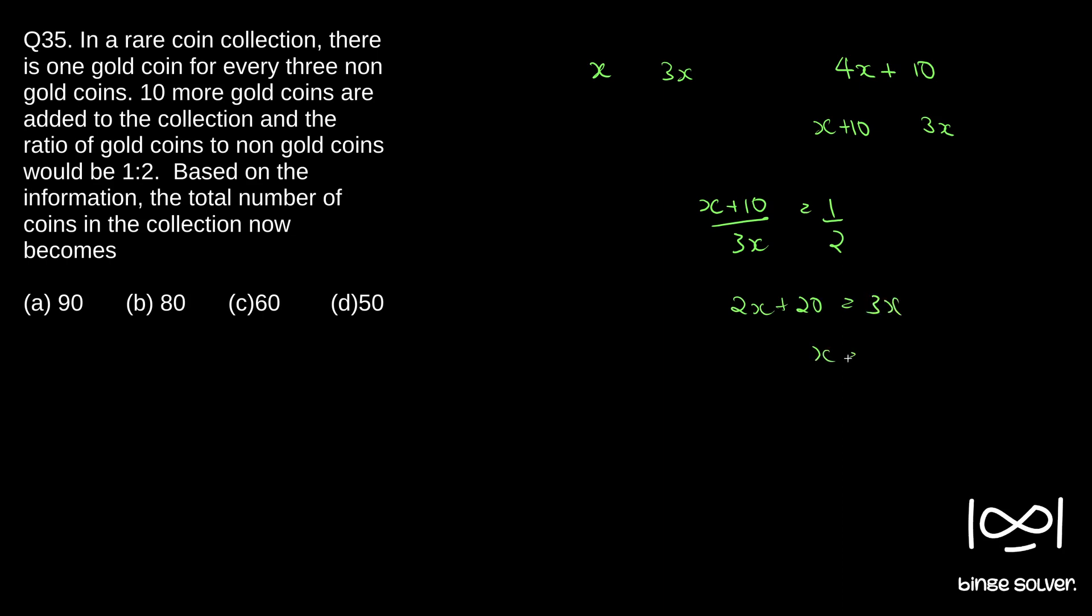So the total number of gold coins now is X plus 10 and 3X gold coins and non-gold.